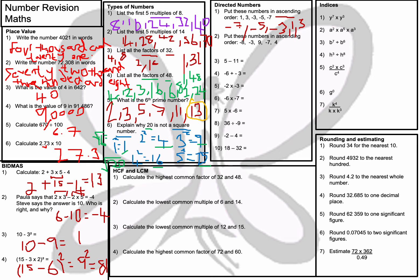Question number 2: put these numbers in ascending order. Again, smallest to biggest. The smallest number is −8, then −7, then −3, then 4, and then 9. So the order is: −8, −7, −3, 4, 9.